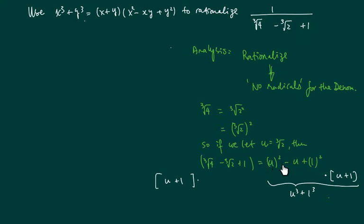This is significant because in order to use this one over here, I have to have x squared minus x times y plus y squared, and we have that.